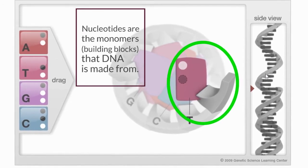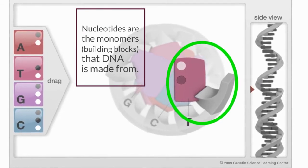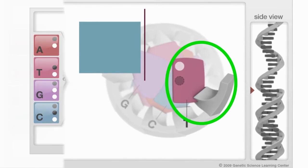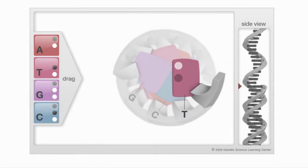Nucleotides are the monomers, single building block pieces, that make up polymers of DNA when they are joined together. On the left side you can see the four different nitrogen bases of DNA. They are A for adenine, T for thymine, G for guanine, and C for cytosine.